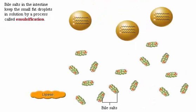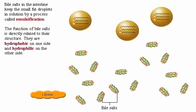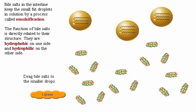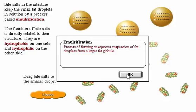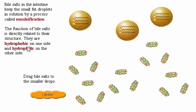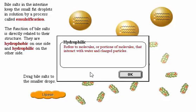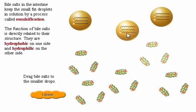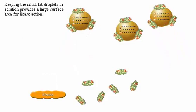Bile salts in the intestine keep the small fat droplets in solution by a process called emulsification. The function of bile salts is directly related to their structure — they are hydrophobic on one side (their steroid core) and hydrophilic on the other, primarily due to the presence of hydroxyl groups. Keeping the small fat droplets in solution provides a large surface area for lipase action.